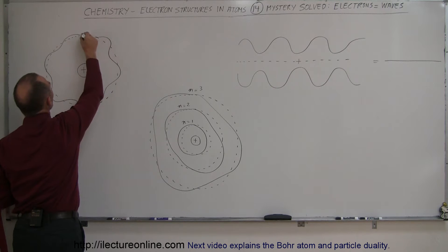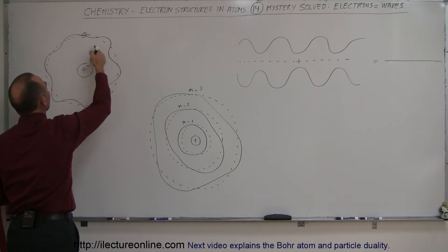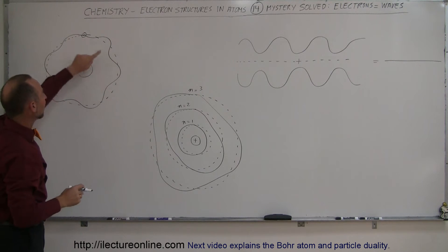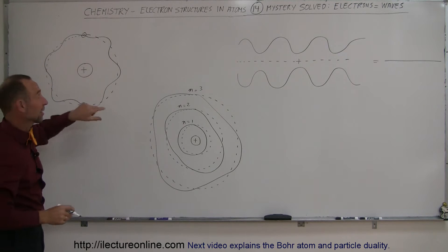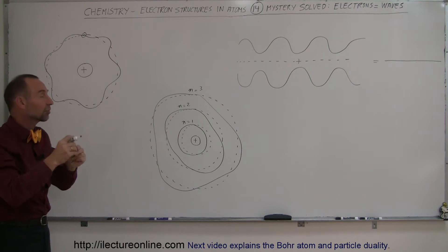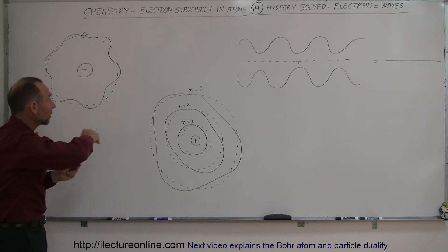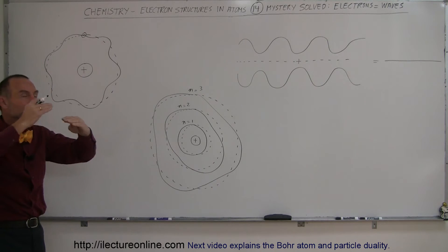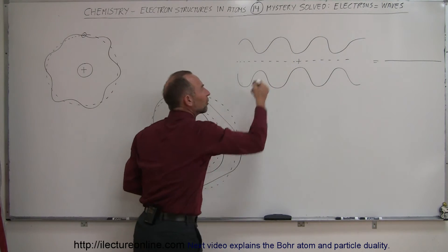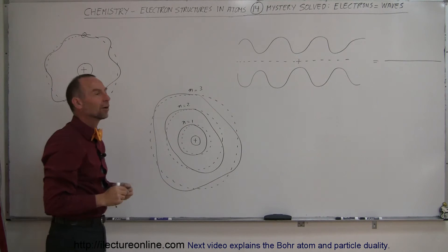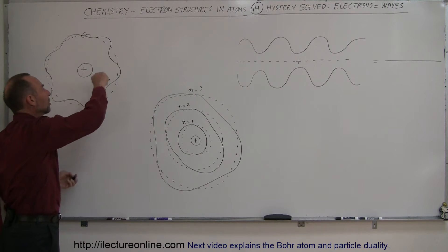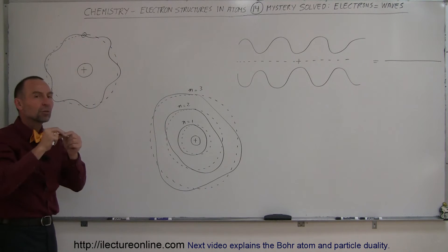Then if it comes around and meets up with where it was in the beginning — because it doesn't take very long for the electron to go around the nucleus — when it meets up again where the electron was before it went around, it will actually interfere with itself, just like two waves interfere with each other. So the wave of the electron will actually interfere with itself.